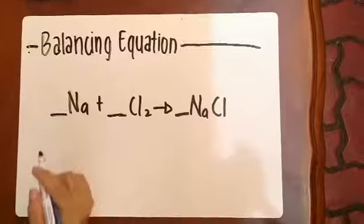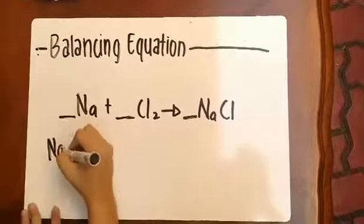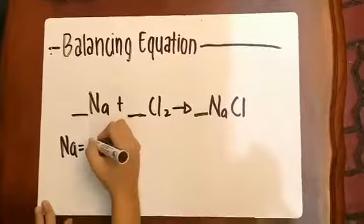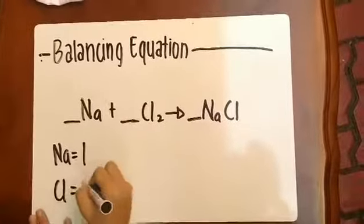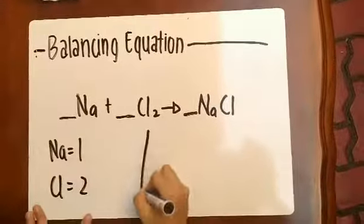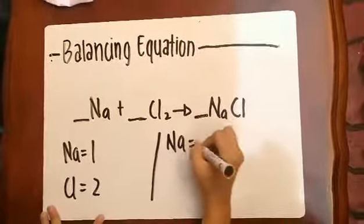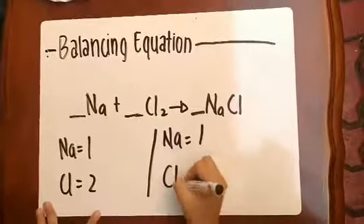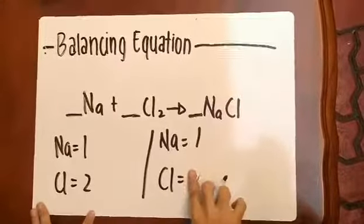For another example, sodium is equal to 1, fluorine is equal to 2. In the product, sodium is equal to 1, fluorine is equal to 1.